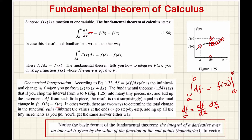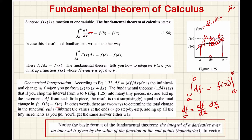So you have two methods. One: you can sum up all the small differences df1 plus df2 plus ... up to dfn to get the value of the integral. Or equivalently, you take the value of the function at the end points — upper limit minus lower limit — that is f of b minus f of a. Both methods give the same value.